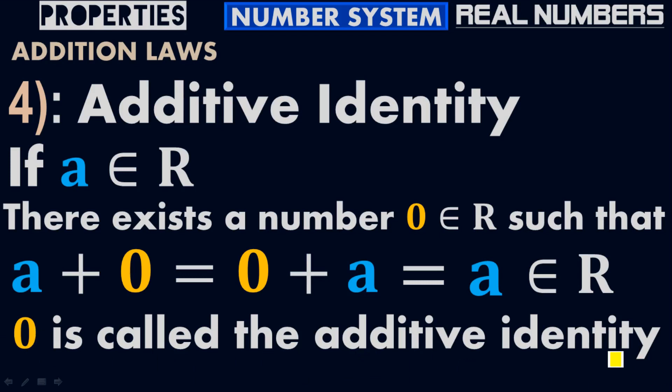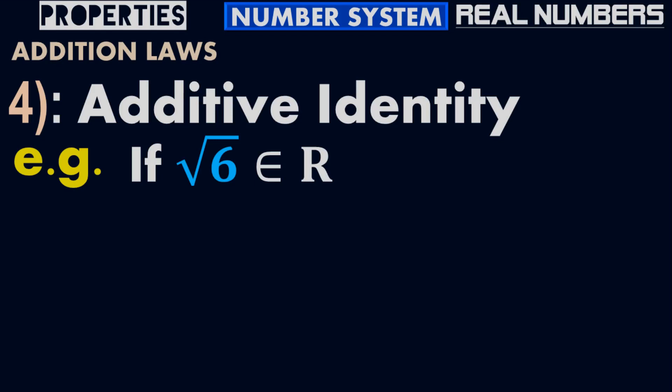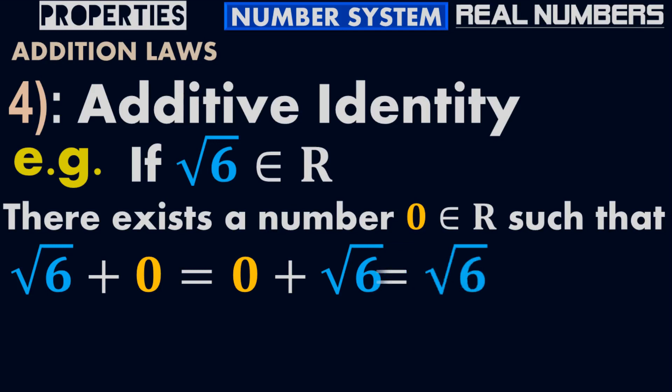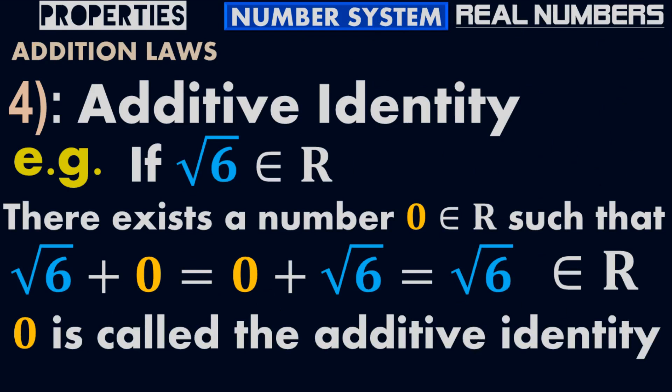For example, if A equals √6, which is an irrational number, there exists a number 0 which belongs to the real numbers, such that √6 plus 0 equals 0 plus √6 equals √6, which belongs to the real numbers. So 0 is called the additive identity.